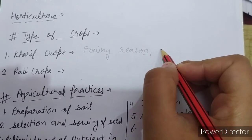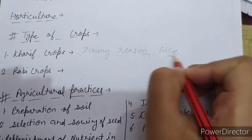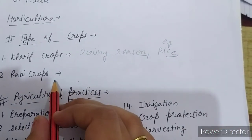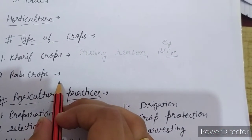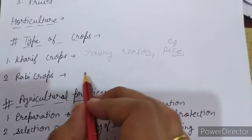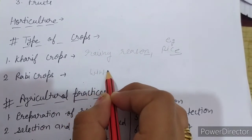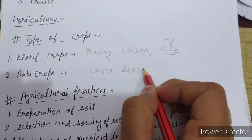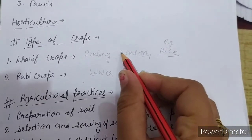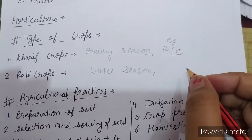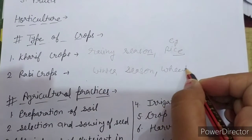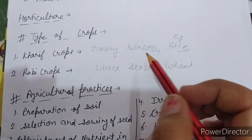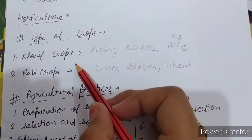What is the example of Kharif crop? Rice is the example of Kharif crop. Next is Rabi crops — Rabi crop कौन सी है? The crops that are grown in winter season — means वो crop जो हम winter season में grow करते हैं, उसे हम Rabi crop बोलते हैं। Example of Rabi crops: wheat, gram, mustard — these are examples of Rabi crops।